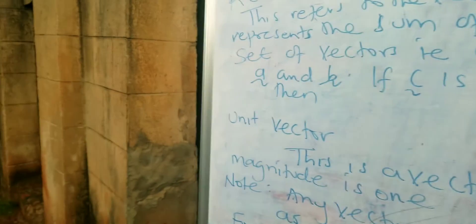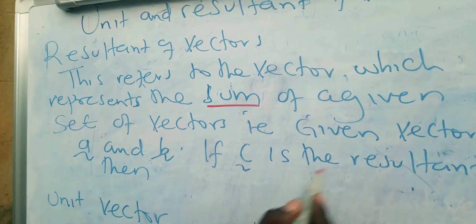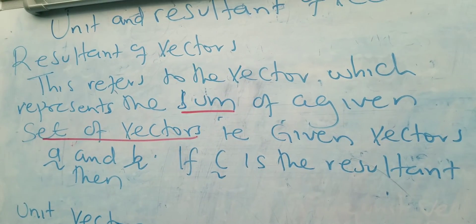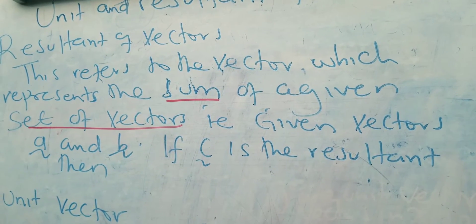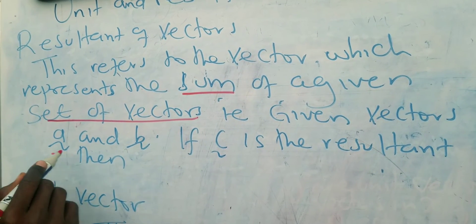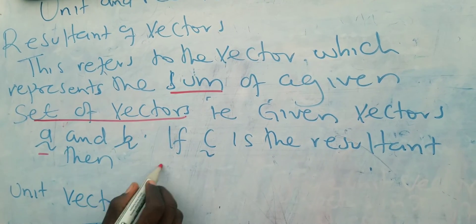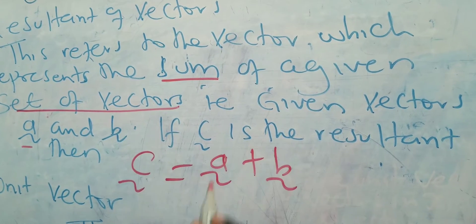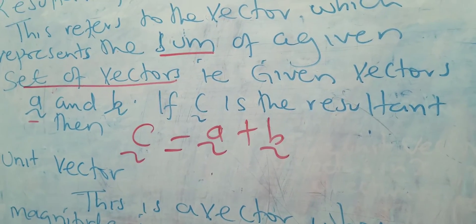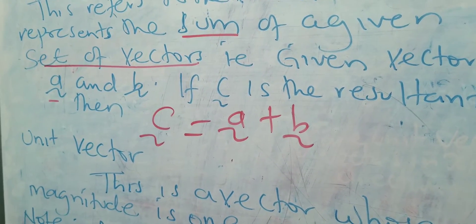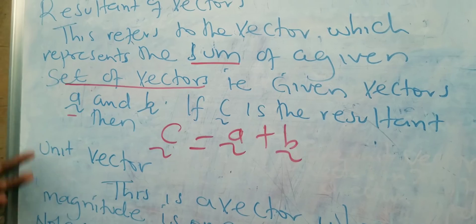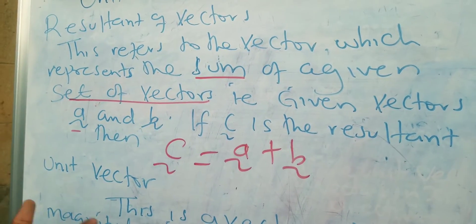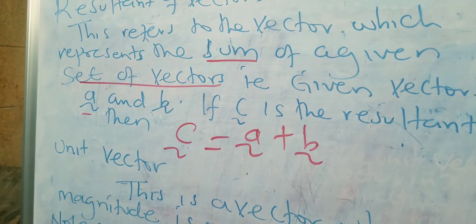The resultant of vectors refers to the vector which represents the sum of a given set of vectors. Whenever you are asked to find the resultant, you are simply finding the sum of a given set of vectors. For example, if I'm given vectors a and b, and c is the resultant, then c equals a plus b. At O-level you did the working but didn't know what you were finding — at A-level questions will ask you to find the resultant of vectors.